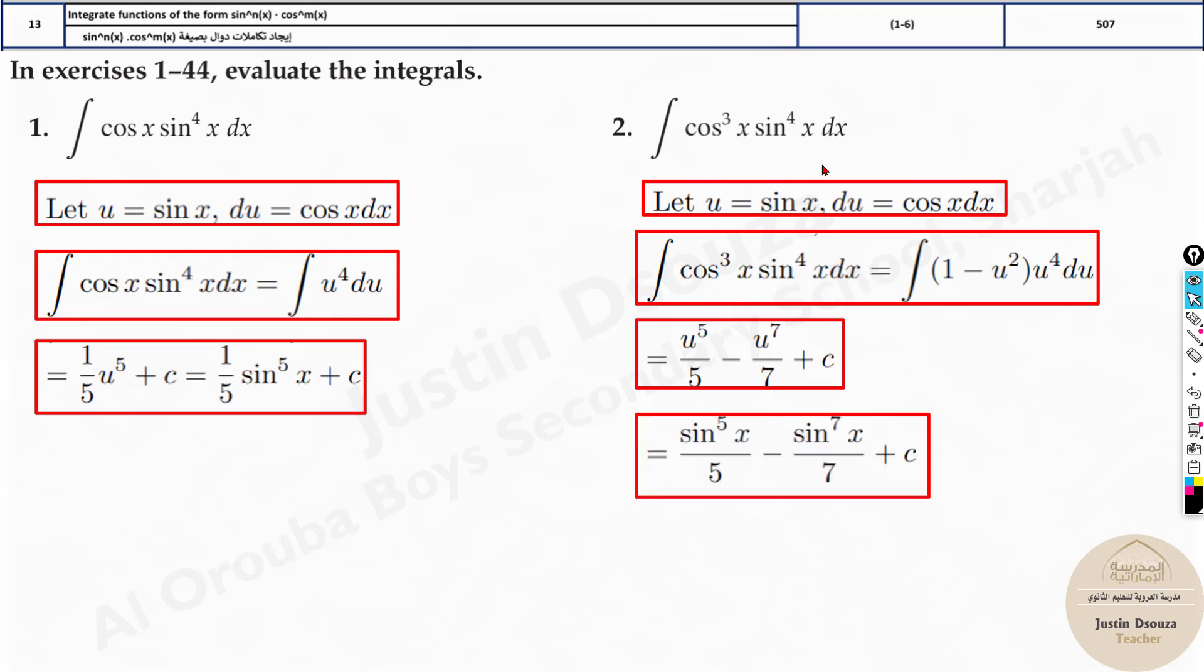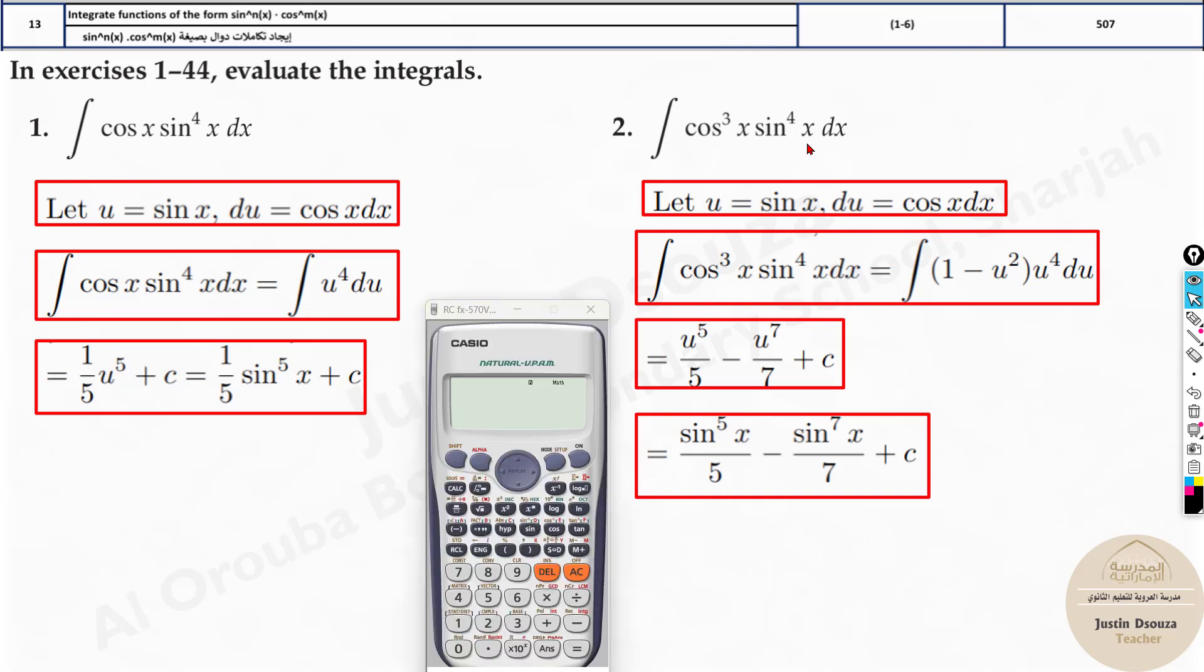Now here I'll show you the calculator method. First, assume an x value. Since it's sine cosine, it's all fine—no inverse, no square root—so you can choose any x value and please use radian mode.